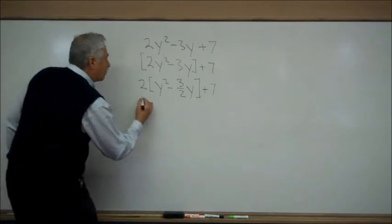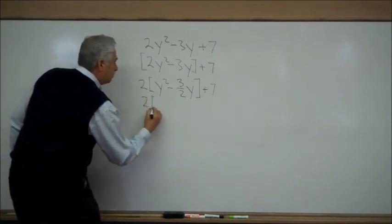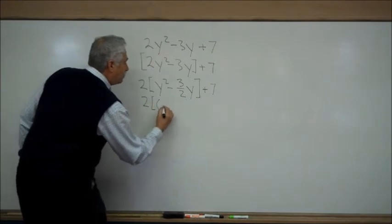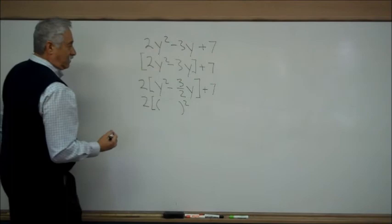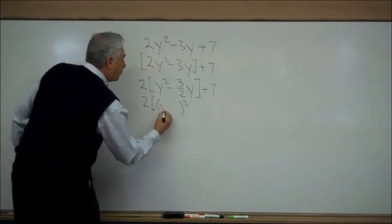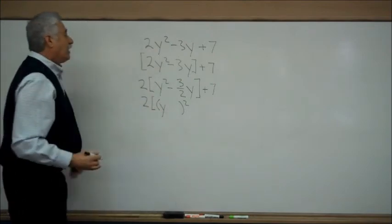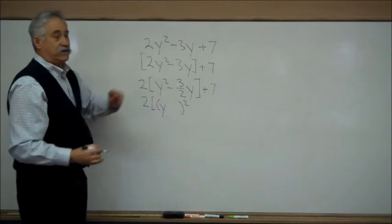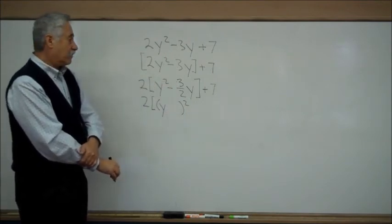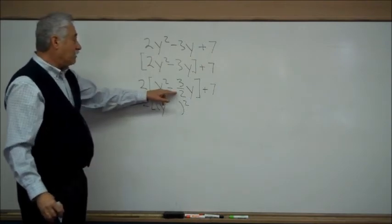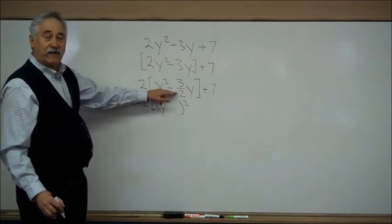So, this is the completing the square step. Parentheses squared. I want to get a y² I write a y. And I want half of 3 halves. How do I find half of 3 halves? I put a 2 into the denominator in order to find half.